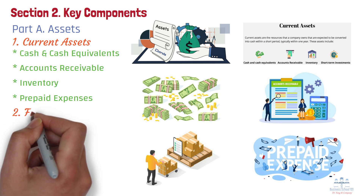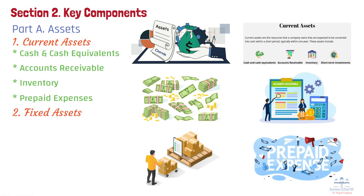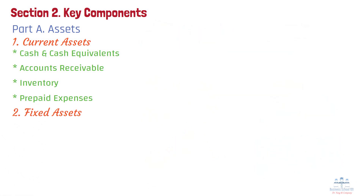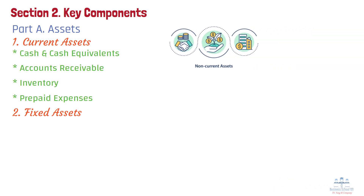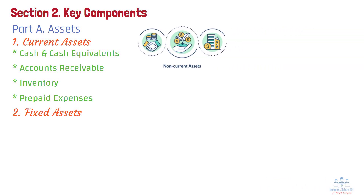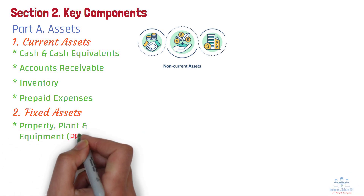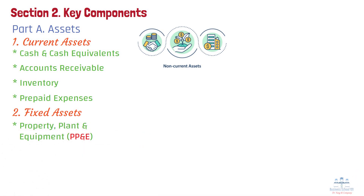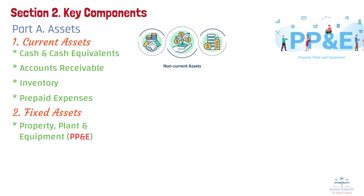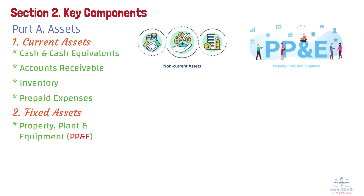Type 2: Fixed assets. Fixed assets, also called non-current assets, are resources that a company owns and uses for more than one year. These assets are essential for long-term operations. Examples include property, plant, and equipment (PP&E) — physical, tangible assets such as land, buildings, machinery, and office equipment — which help businesses produce goods or provide services.